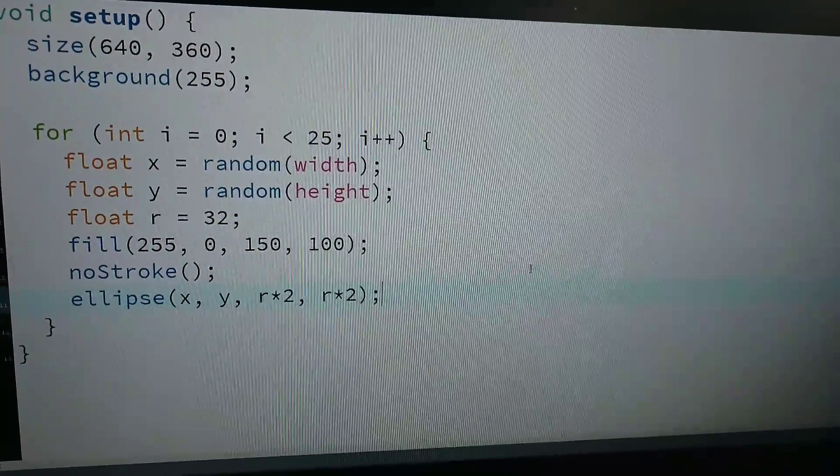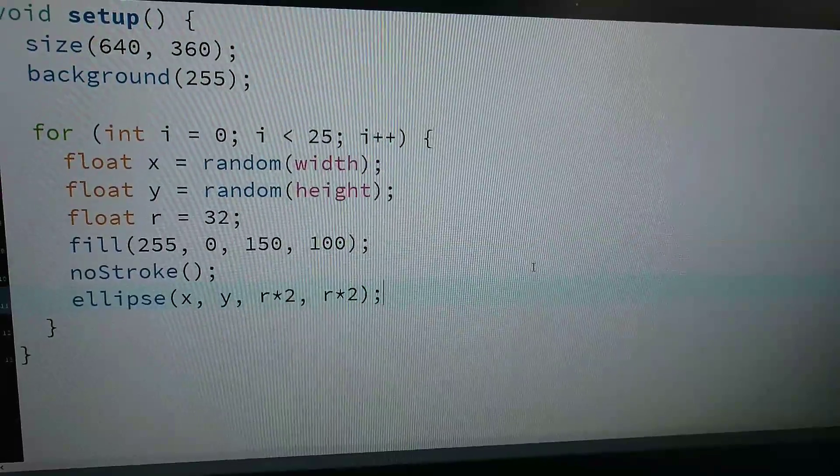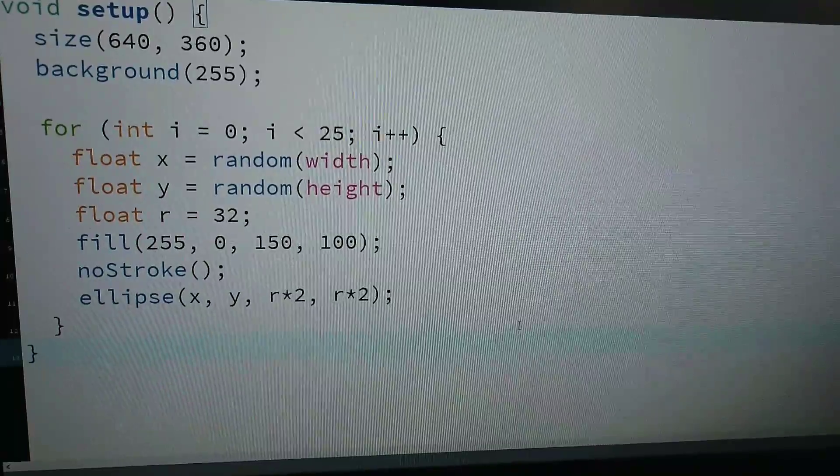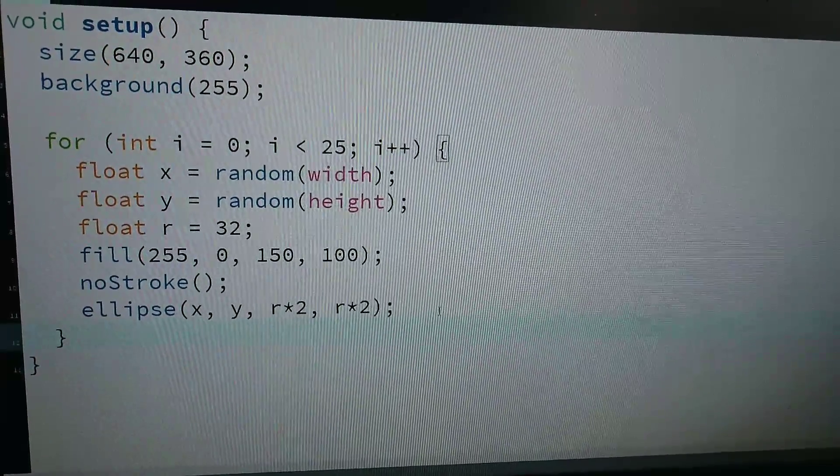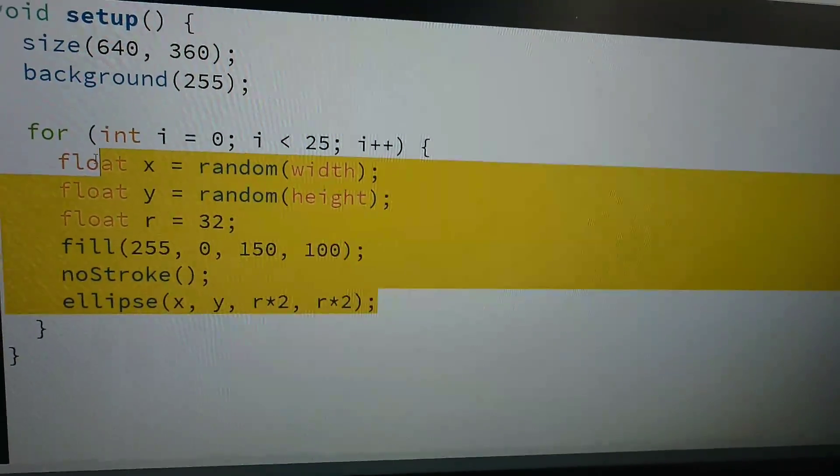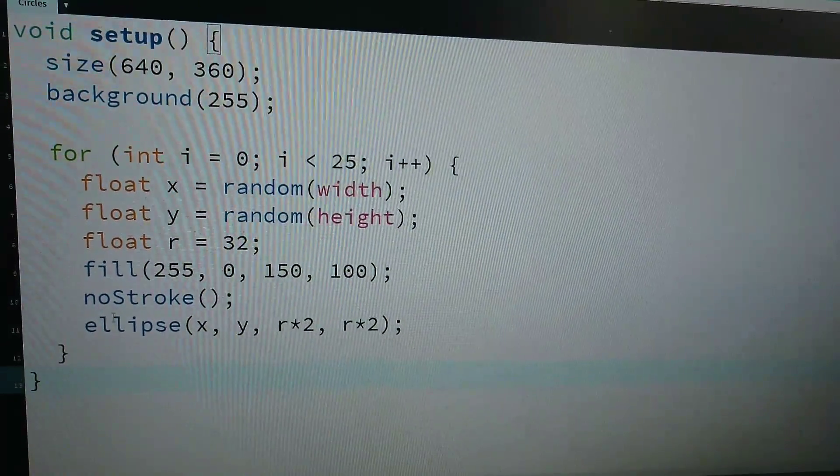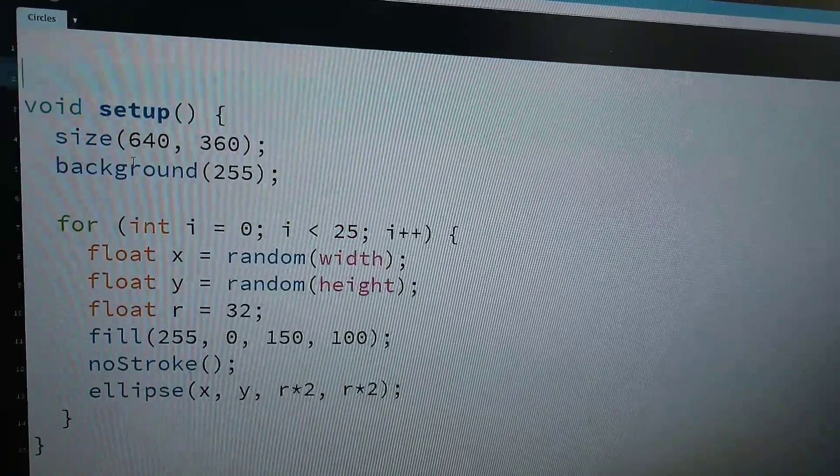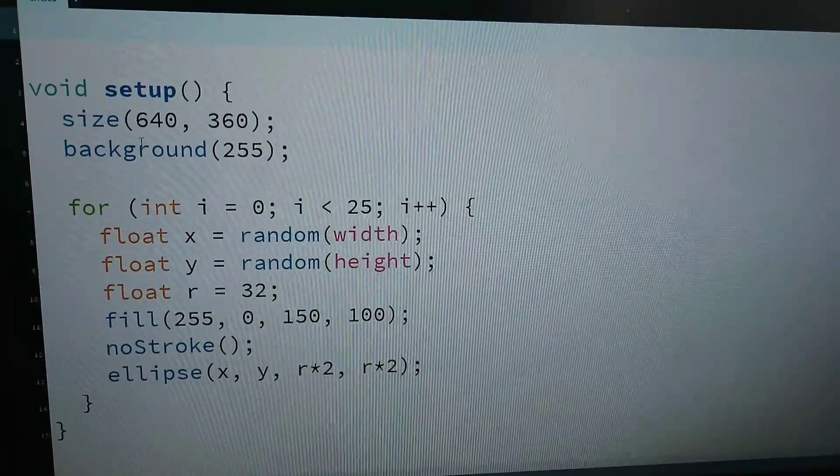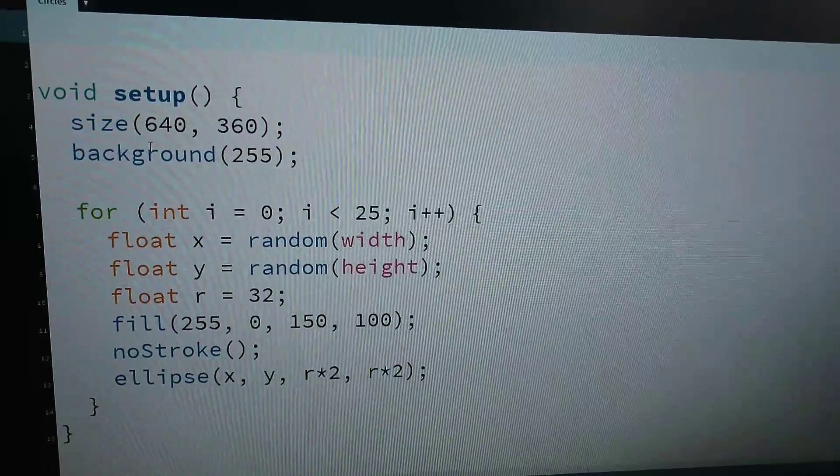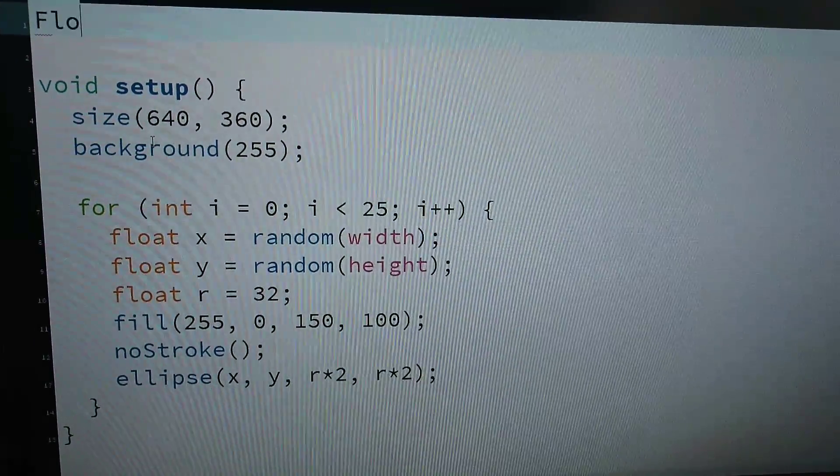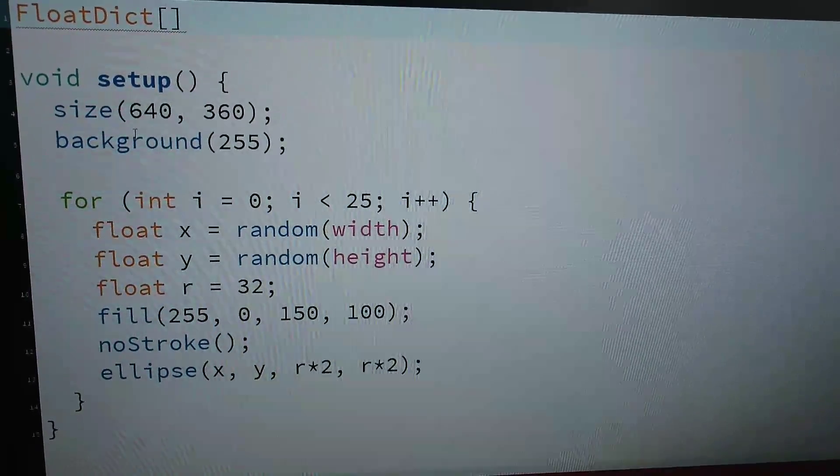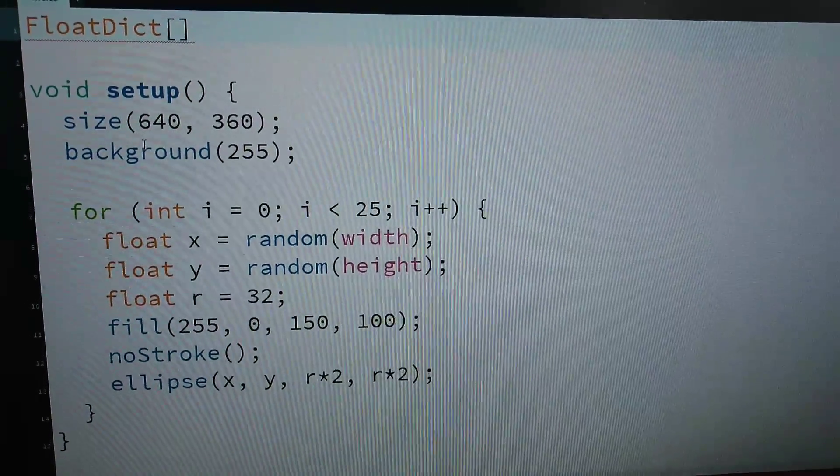So first of all, we are not saving any of these circles. In that sense we need an array, right? I need an array to keep track of all the circles. Now I'm not actually going to make it a circle array. I'm actually going to use something instead called a float dictionary. I'm going to call it circles.